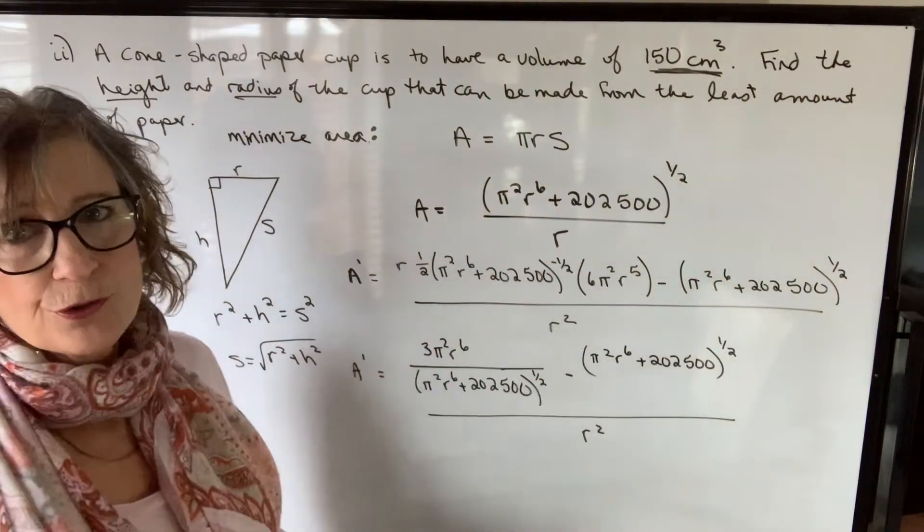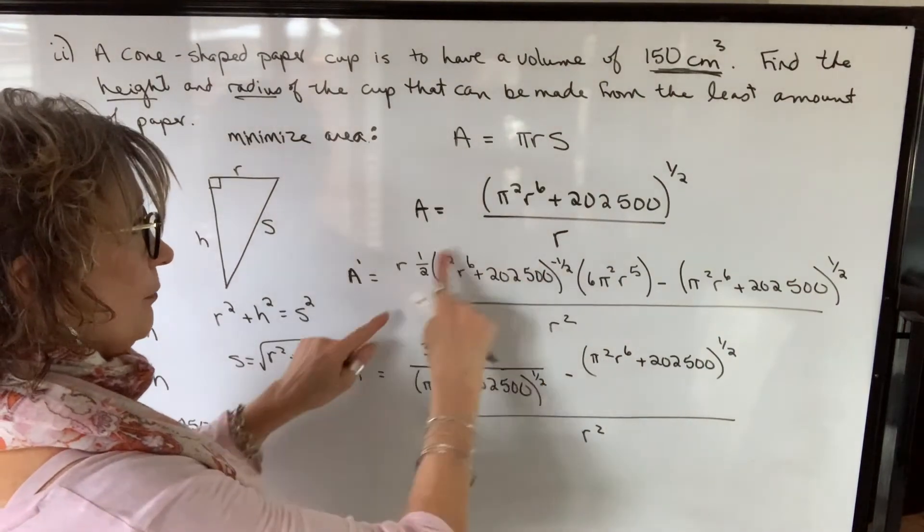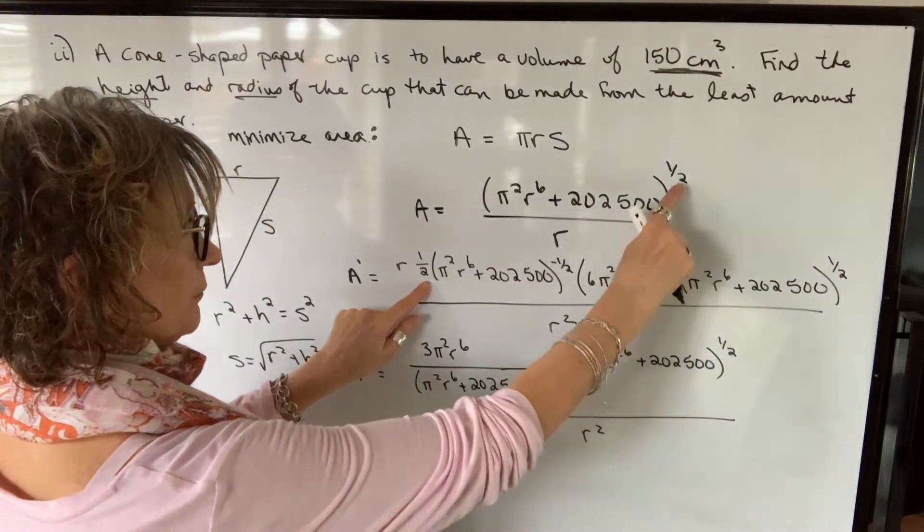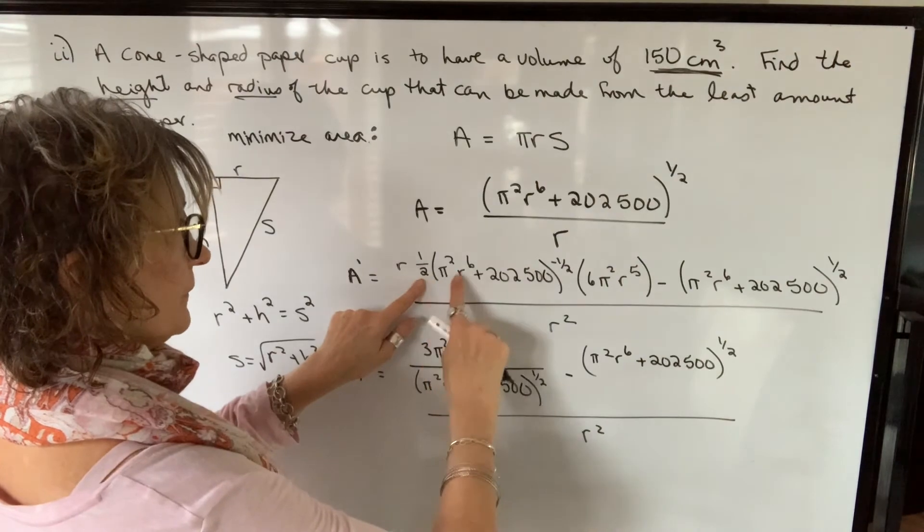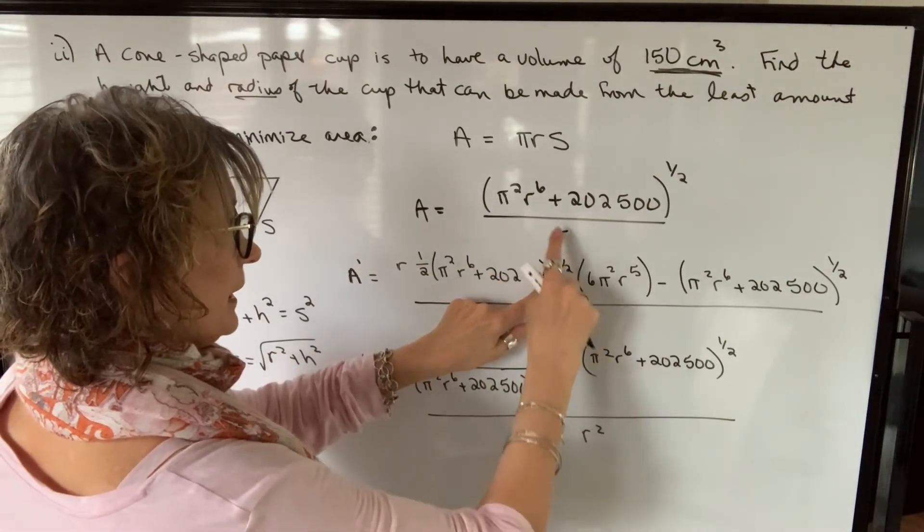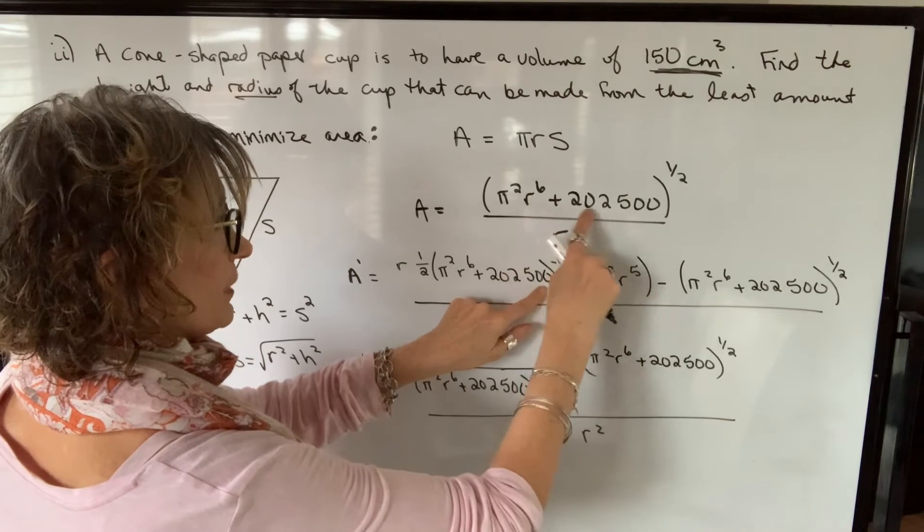So I need to use the quotient rule. And when I do that, I take the denominator r multiplied by the derivative of the numerator, which is a power. So it's one half this to the one half minus one. Then I multiply by the derivative of what's inside. This is a constant.